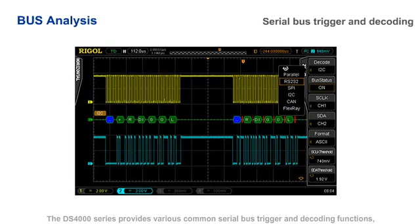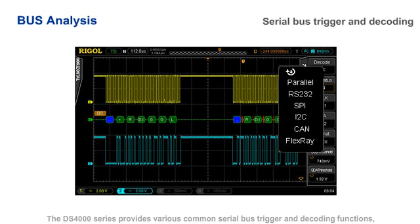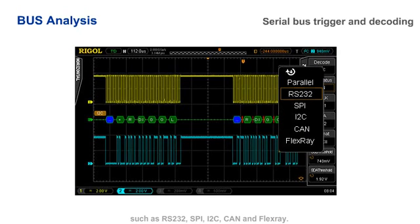The DS4000 series provides various common serial bus trigger and decoding functions such as RS232, SPI, I2C, CAN, and FlexRay.